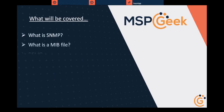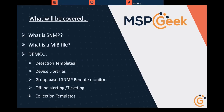What we're going to cover tonight is network monitoring, getting into certain specifics using Automate. I don't want to assume everyone has the same knowledge, so I'm going to start off with the basics. First off, what is SNMP and a MIB file? Then we're going to go into a demo covering detection templates, device libraries, SNMP remote monitors, and offline alerting and ticketing. Collection templates I've put at the end based on how we do for time.